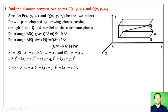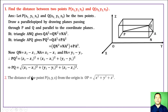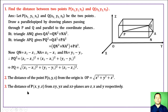The distance between P(x1, y1, z1) and Q(x2, y2, z2) is thus established. The distance of point (x, y, z) from the origin is OP = √(x² + y² + z²). The distances from the XY, YZ, and XZ planes are z, x, and y respectively.